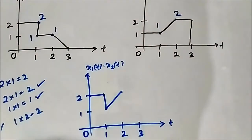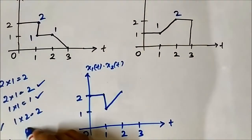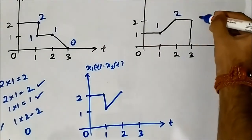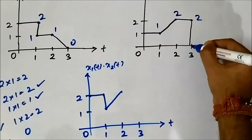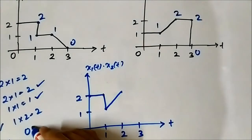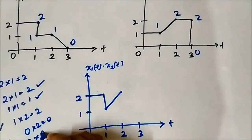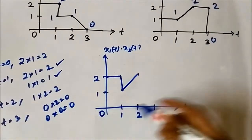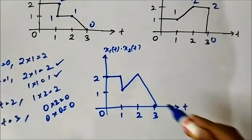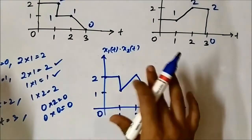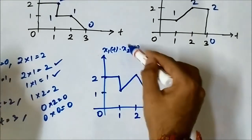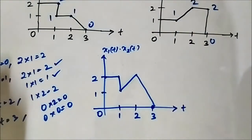At t equals 3, x1(t) has a value of 0, and there is a downward transition so we consider both values, 2 and 0. But it doesn't matter because 0 multiplied with anything — be it 2 or 0 — will be 0. So at t equals 3 the resultant value is 0. This is the multiplied signal of x1(t) and x2(t), and this is the output.